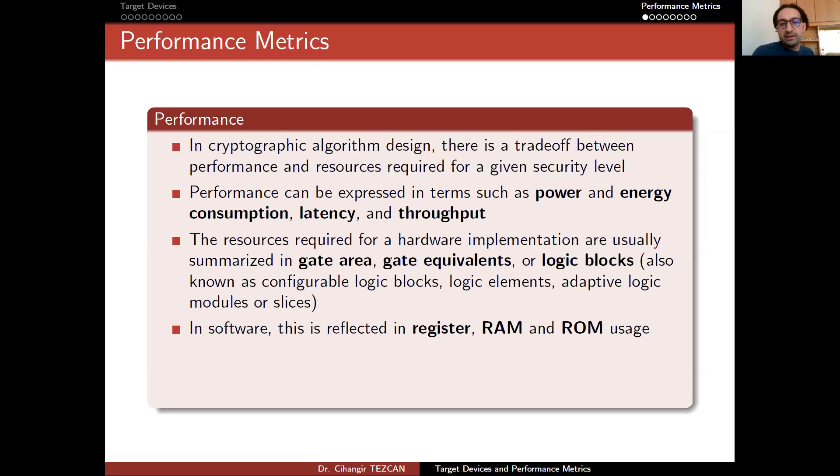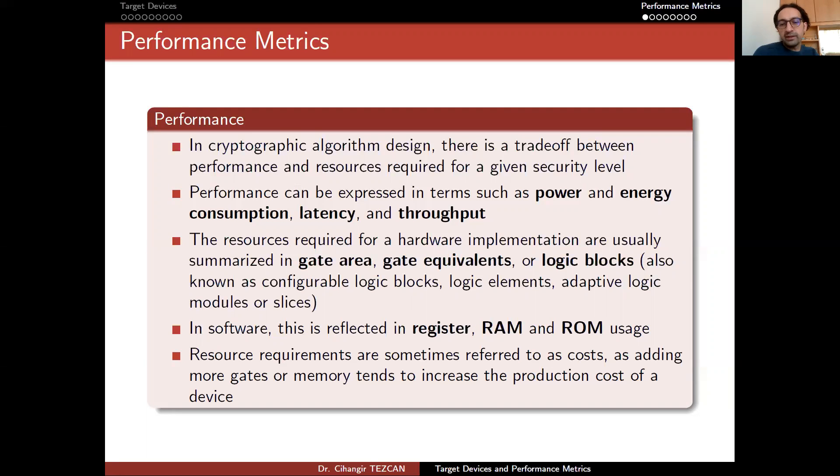In software, this is reflected in register, RAM, and ROM usage. Resource requirements are sometimes referred to as cost, as adding more gates or memory tends to increase the production cost of a device, especially in hardware where you have a limited number of gates and limited memory.